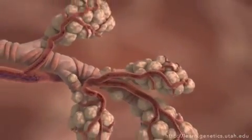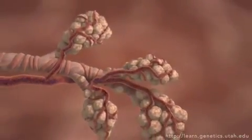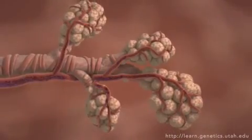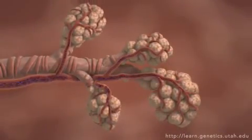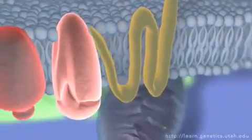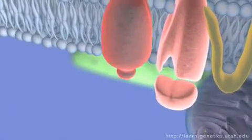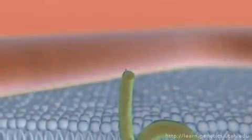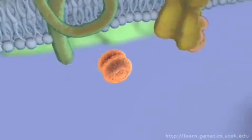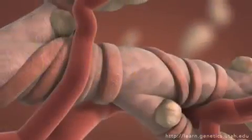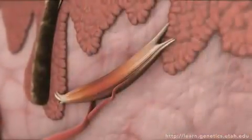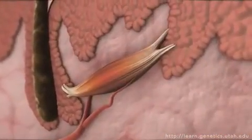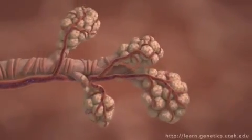In the lungs, the signaling molecule docks on muscle cells wrapped around bronchioles, but these cells relax instead of contract to allow more oxygen into the blood. Because the protein machinery inside each kind of muscle cell is different, this single type of signaling molecule can cause both relaxation and contraction. Many signaling molecules work this way.